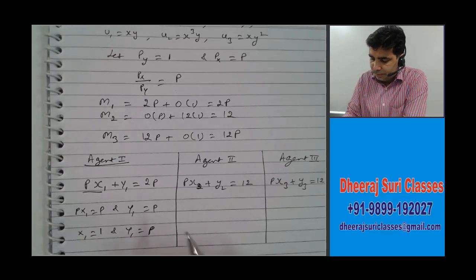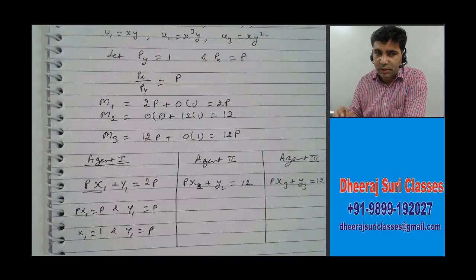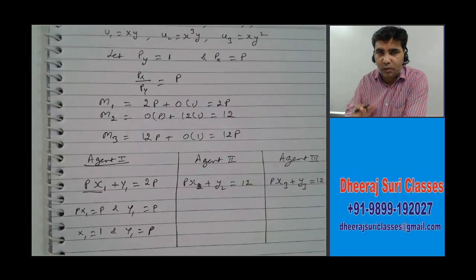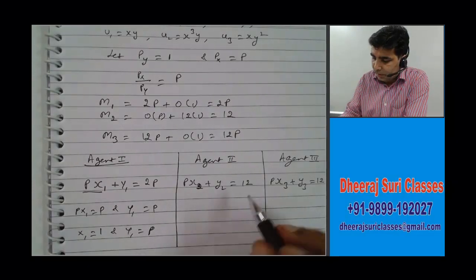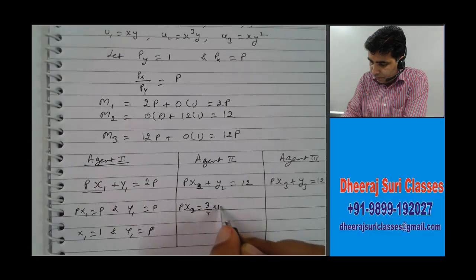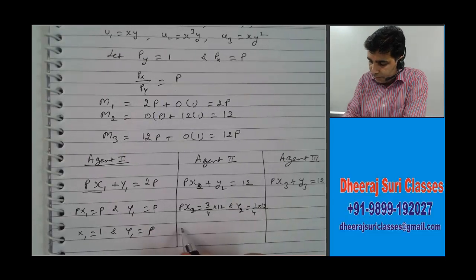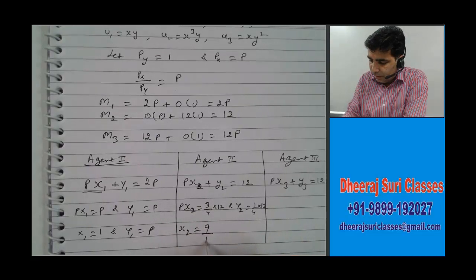By the same notion, agent 2 has utility function x cubed times y. So he is spending 3/4 of his income on good 1 and 1/4 on good 2. His income is 12, so Px·x2 is 3/4 of 12, and y2 is 1/4 of 12. That means x2 is 9/P and y2 is 3.